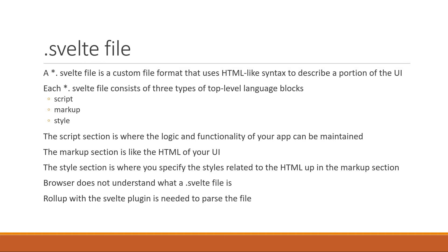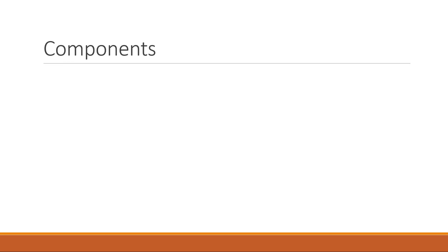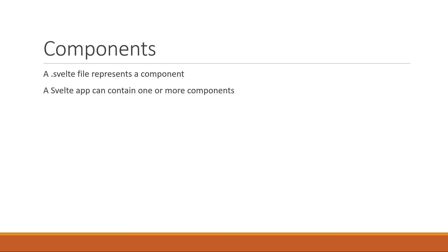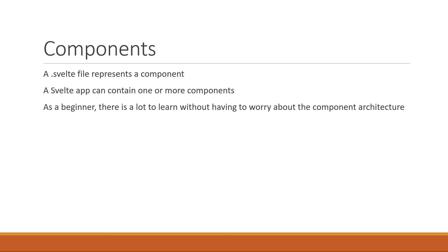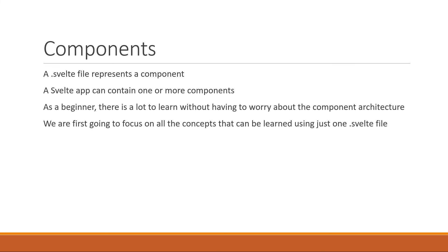Alright, now that we have a bit more information about this Svelte file, let's discuss two more points which will set us up to finally get started with some code in the next video. The first point is about components. Right now we have a Svelte file called app.svelte. In Svelte, a .svelte file represents a component. A Svelte app can contain one or more of these components. When learning Svelte as a beginner though, there is a lot to learn with just one Svelte file, so we don't have to worry about multiple Svelte files and the component architecture to begin with.